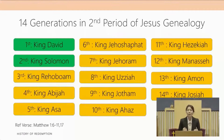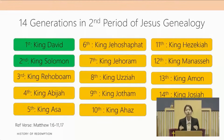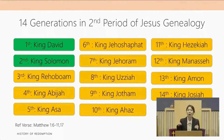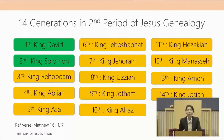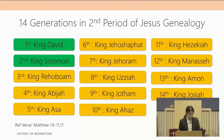There are 14 generations in each period. I have listed the 14 generations in the second period of Jesus' genealogy. The first and second generations are King David and King Solomon — the kings of the united monarchy. From the third generation, King Rehoboam, all the way to the 14th generation, King Josiah, they are the kings of the southern kingdom of Judah. During the time of King Rehoboam the nation split into northern Israel and southern Judah. Today we are reviewing the seventh generation, King Jehoram, all the way to the 14th generation, King Josiah.